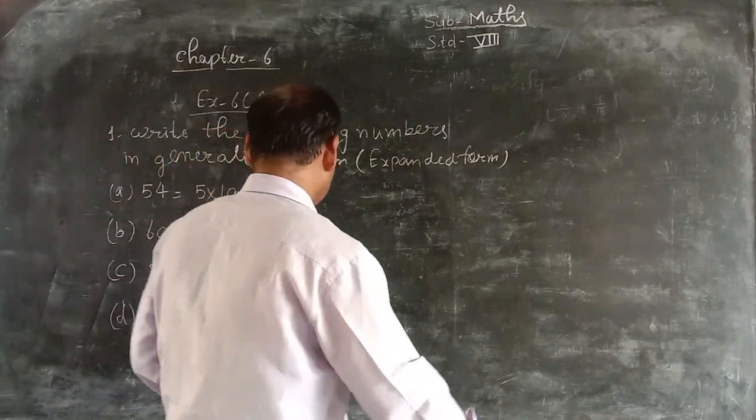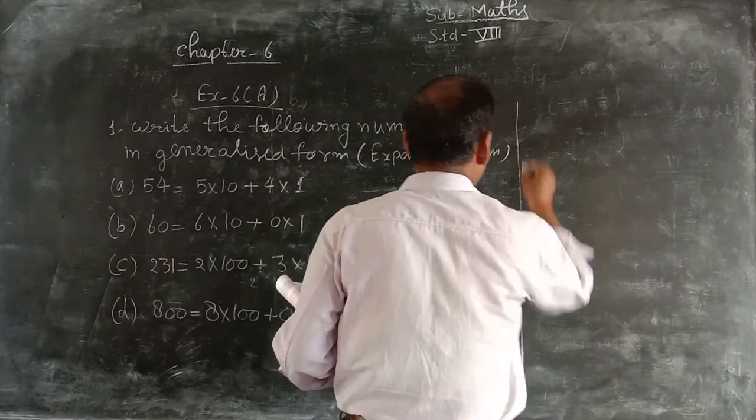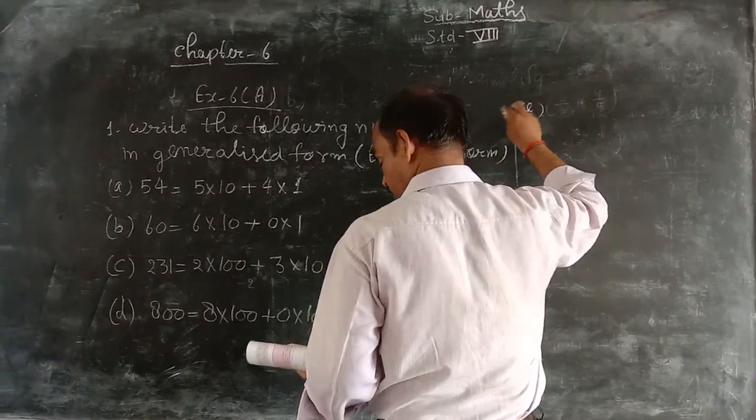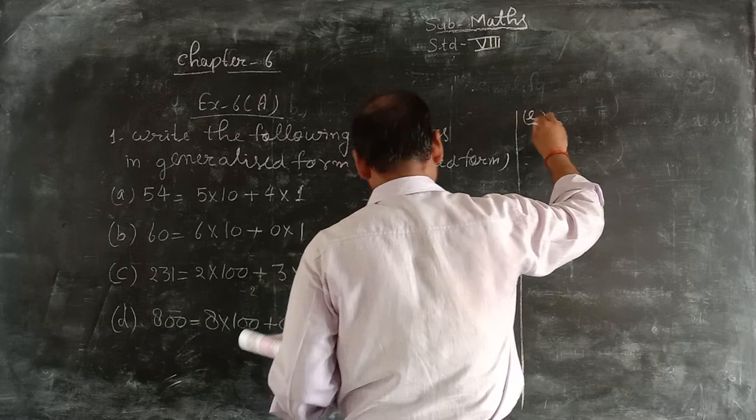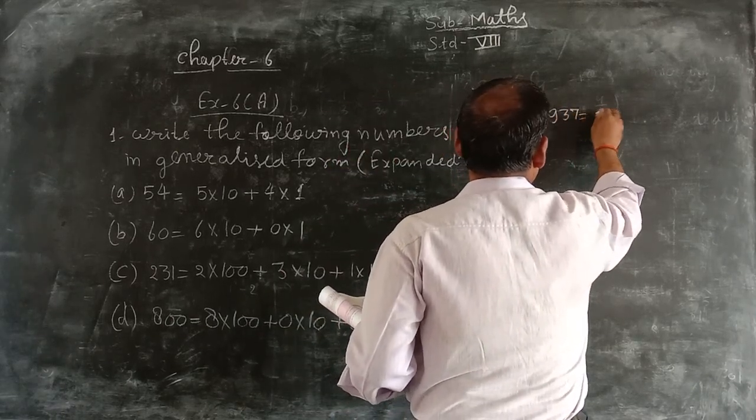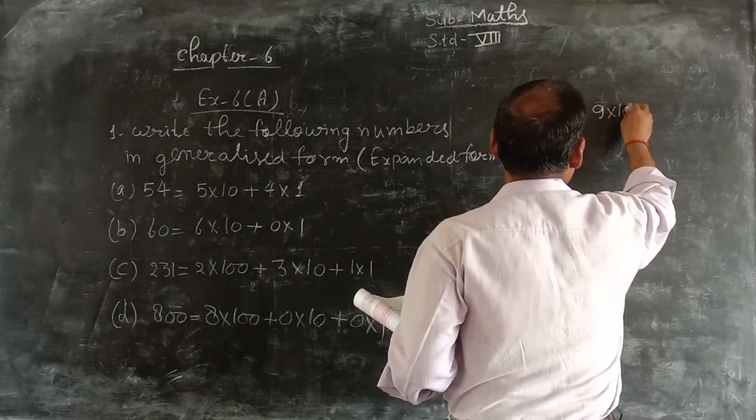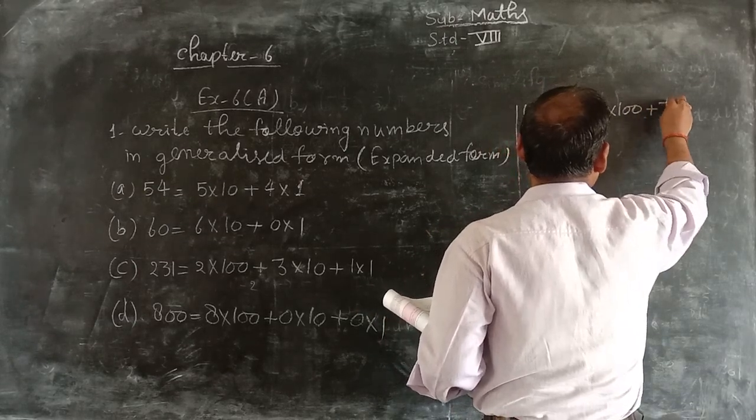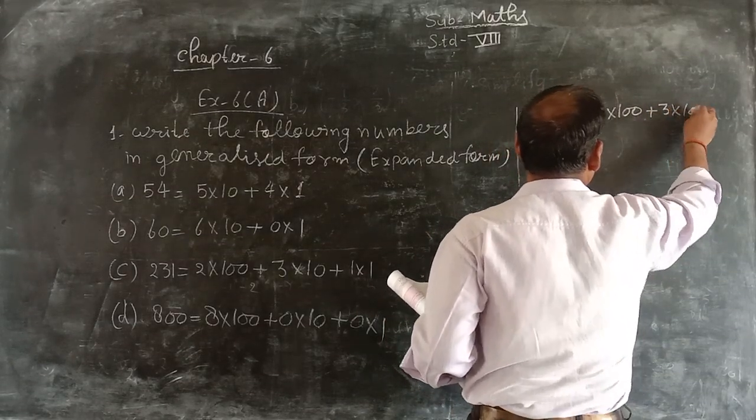Next part, 957. 9 multiply 100 plus 5 multiply 10 plus 7 multiply 1.